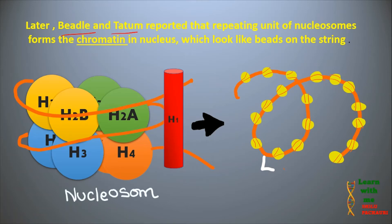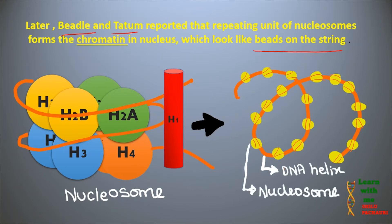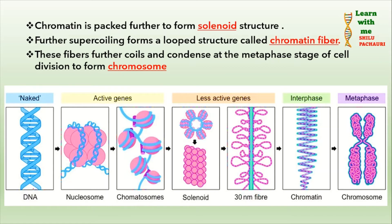This forms a structure like beads on a string, as if beads are threaded onto a string. This is called the beads-on-a-string structure, where the beads are nucleosomes and the string is the DNA helix. These chromatosomes then further coil to form a solenoid structure. As you can see in the image, the loosest structure is the DNA helix, and when it wraps around the octamer it forms a nucleosome.